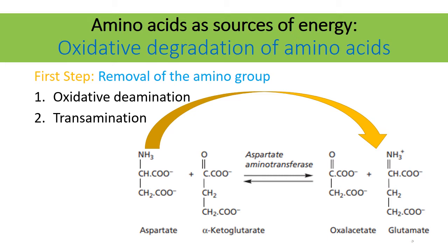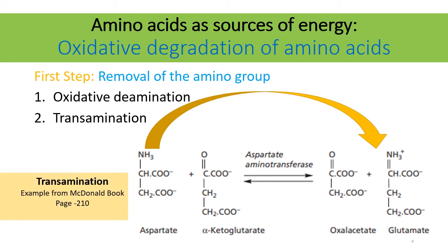This results in the production of another keto acid and glutamate. The reaction is catalyzed by the enzyme aminotransferase. For example, using aspartate aminotransferase: aspartate and alpha-ketoglutarate are the substrates; the products are oxaloacetate and glutamate. The amino group is transferred from aspartate to alpha-ketoglutarate, converting it into glutamate, while aspartate is converted into oxaloacetate.